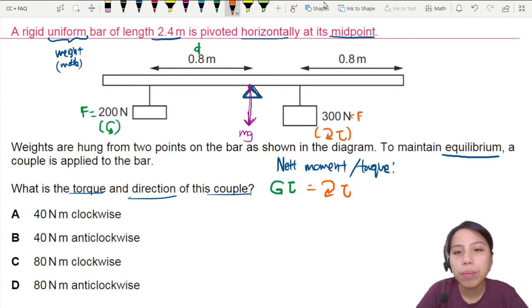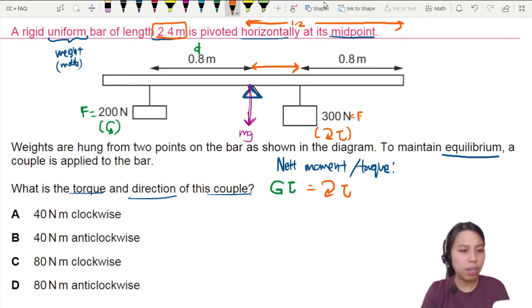This is force, distance from pivot. Oh, it's a bit tricky here. What is this distance? Half the distance of the rod is 1.2. So 1.2 is the entire half of this rod. So 1.2 minus 0.8 is 0.4. That is the distance for the clockwise torque.